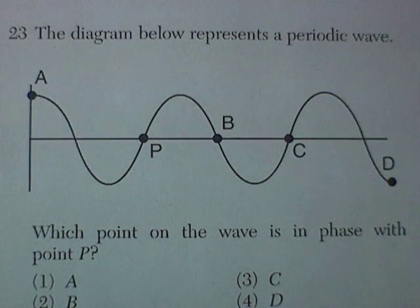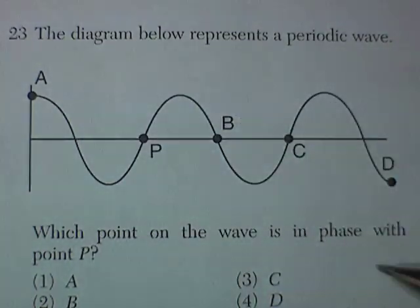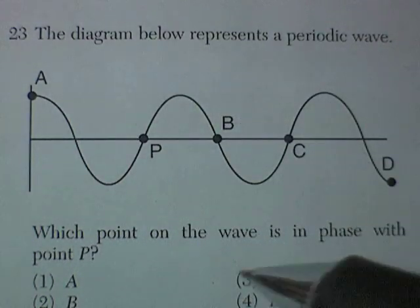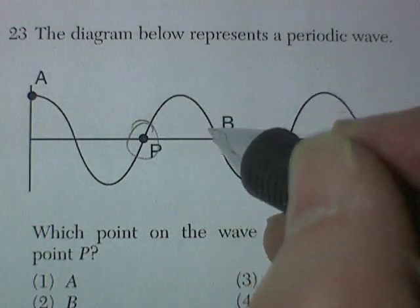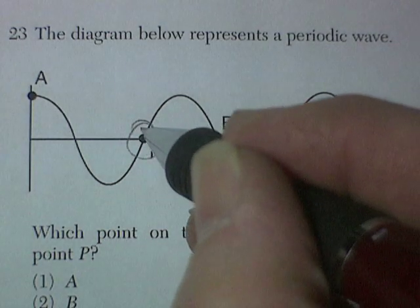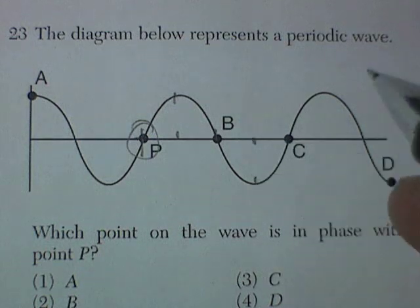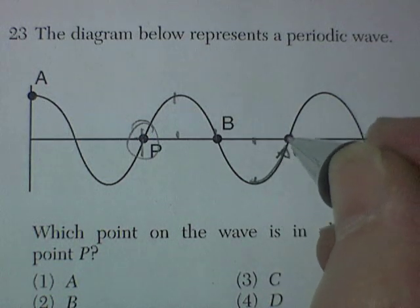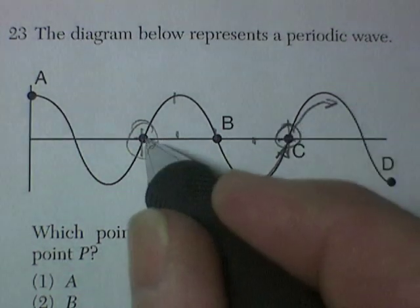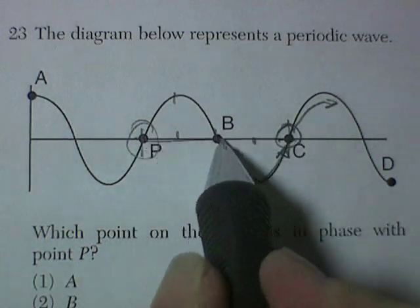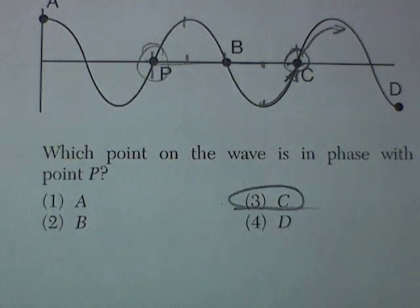Question 23. The diagram below represents a periodic wave. It starts and goes back and forth. Which point on the wave is in phase with point P? Well, in phase refers to being 360 degrees out of phase. So if we started here at zero, that would be 90 degrees, 180 degrees, 270 degrees, and then back up to 360 degrees. Then we're starting all over again. So point C would be in phase with point P, exactly one wavelength apart. So I'm looking for choice C, and there it is, choice C.